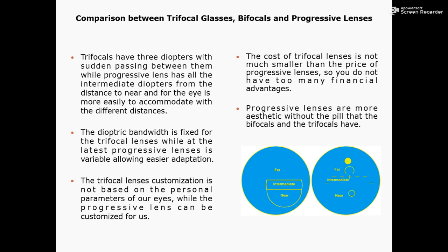Number 4: the cost of trifocal lenses is not much smaller than the price of progressive lenses, so there is no significant financial advantage. Number 5: progressive lenses are more aesthetic, without the visible segment line — called a peel — that bifocals and trifocals have. In bifocal and trifocal lenses there is that visible segment line, but in progressive lenses the distance power, near power, and intermediate power are all present without any such visible dividing line.